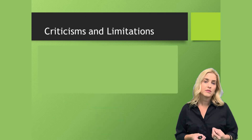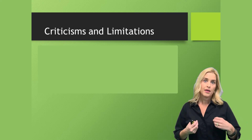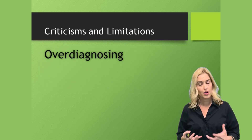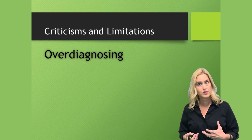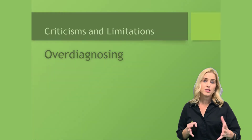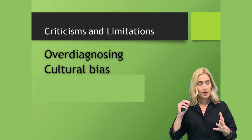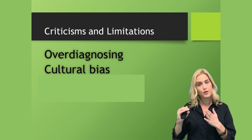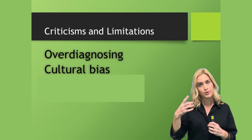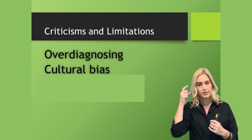There are many criticisms and limitations of the DSM-5 and abnormal psychology. One problem is over-diagnosing — people are over-diagnosed and over-treated with medications and/or therapy. There also seems to be a cultural bias, especially when looking at that fourth criteria of cultural norms. This is one reason why we have four criteria instead of just one — so we can look in four places rather than just one.